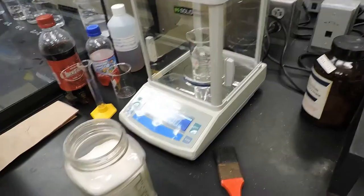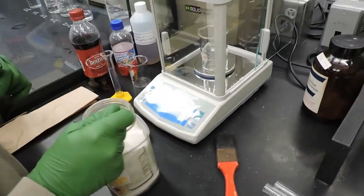So how we do this is we have a beaker and we're going to weigh out approximately 5 grams of sugar for the 5% sugar solution.